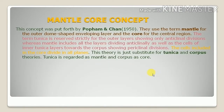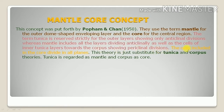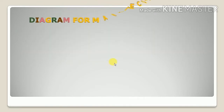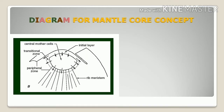The mantle core concept was put forward by Popham and Chan in 1950. They used the term 'mantle' for the outer dome-shaped enveloping layer and 'core' for the central area. The term tunica is reserved strictly for the outer layers showing only anticlinal division, whereas mantle includes all the layers dividing anticlinally as well as the cells of the inner tunica layer towards the corpus showing periclinal division. The cells included in the core divide in all planes.